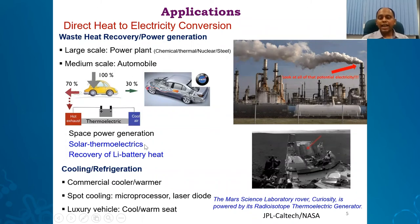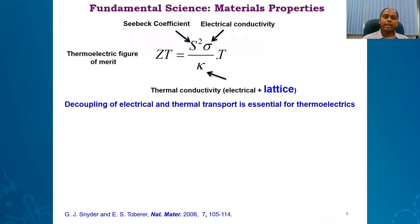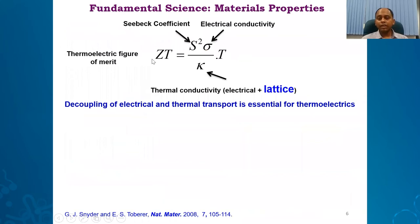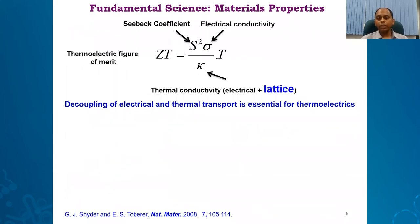The thermoelectric efficiency or performance of a material is governed by ZT — the dimensionless thermoelectric figure of merit. It is purposefully made dimensionless so one can compare material A to material B. If the ZT is higher for material B, then material B is a more efficient thermoelectric.